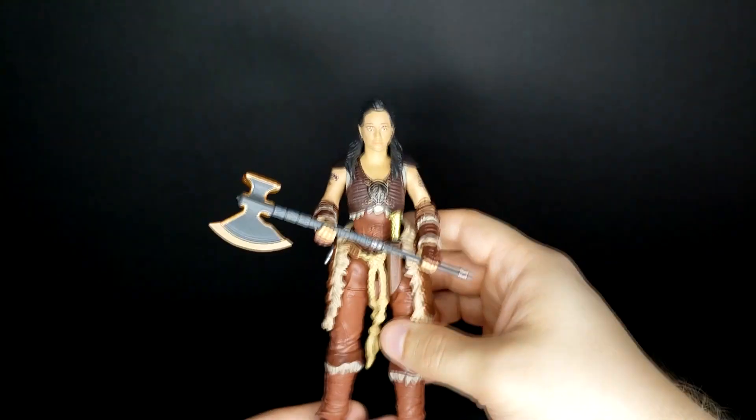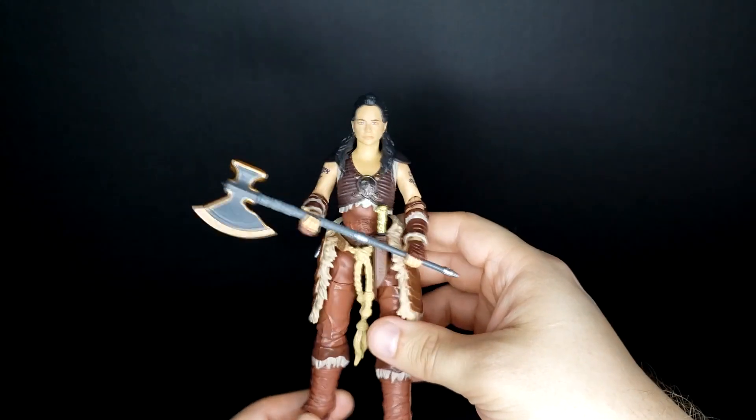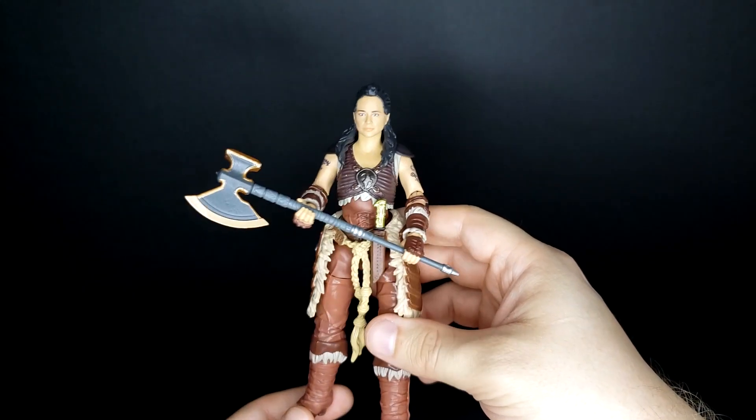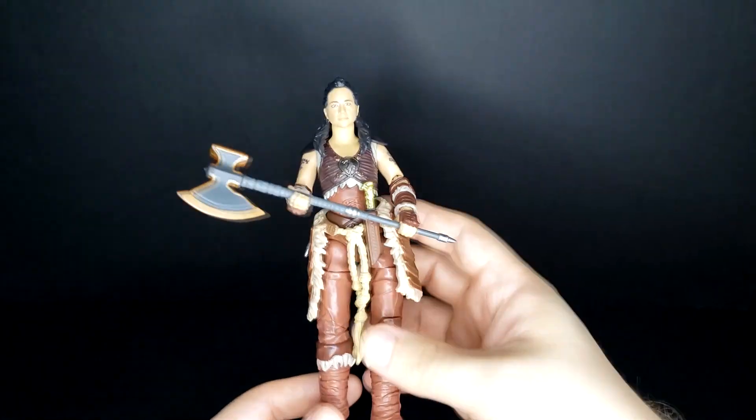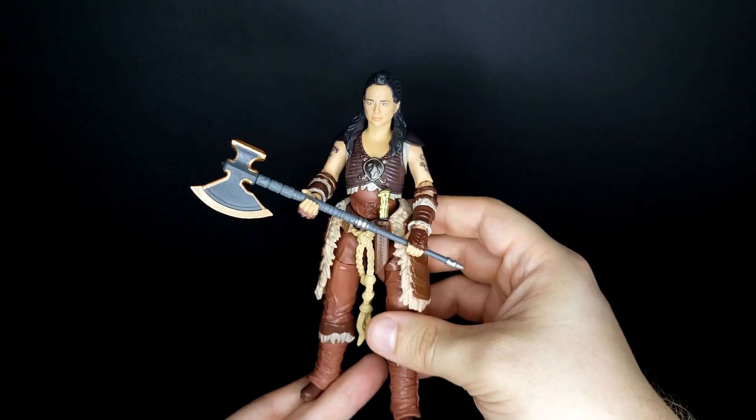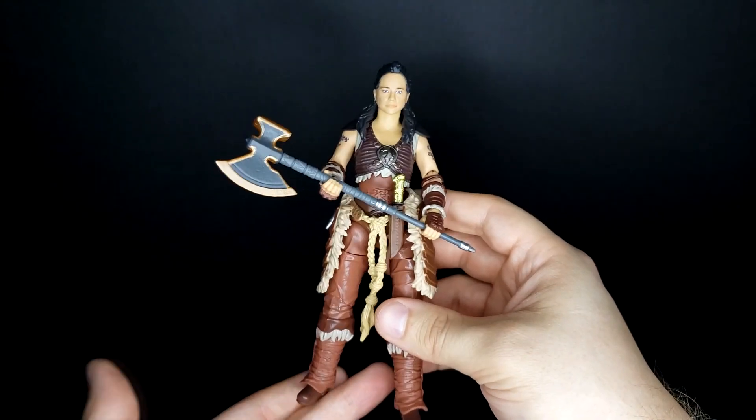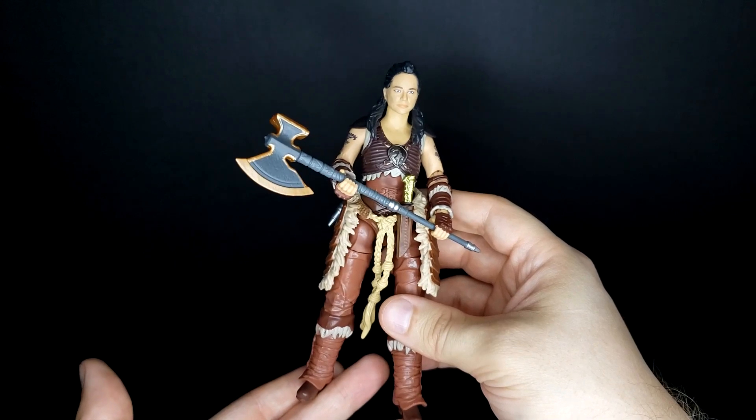So the get it out of the way quickly figure is going to be the Dungeons and Dragons Honor Among Thieves Golden Archive Holga or Olga. I can't remember exactly how they said her name in the movie. They didn't exactly say her name a lot. But yeah this is the only figure I have from the Golden Archive of the main cast so far.